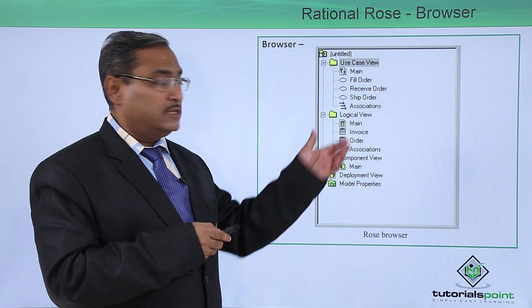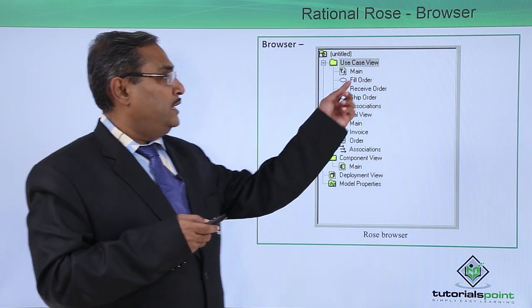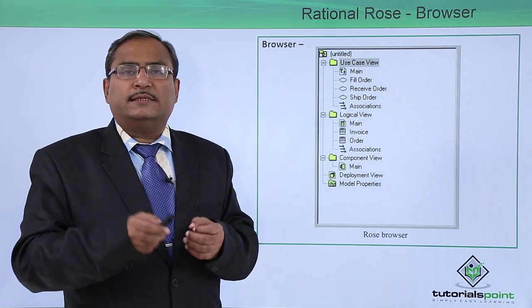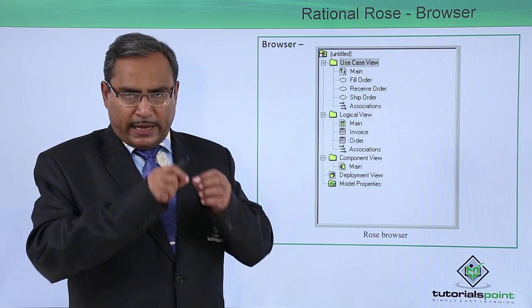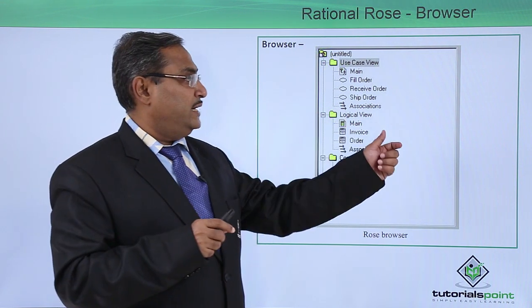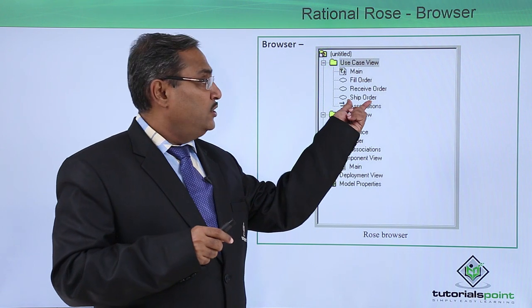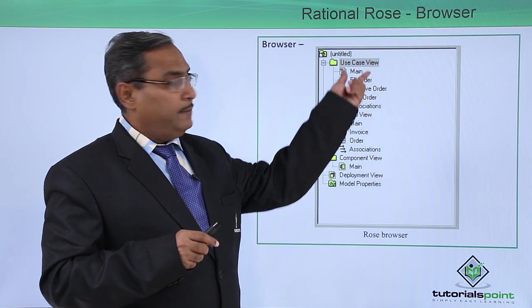Use cases means nothing but the respective functionalities — the respective functions whatever we are going to do — they will be coming here. If you go on adding some other, say order check, you are making another use case. So order check is there, then they will get listed here. This is the use case view we are having.